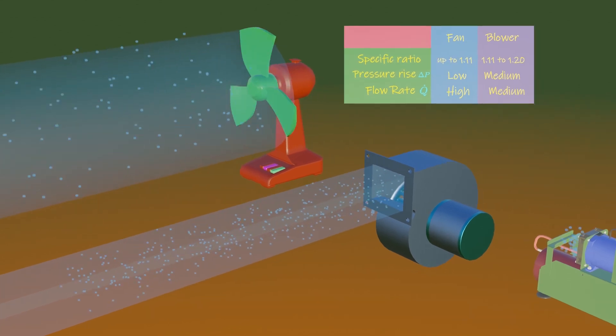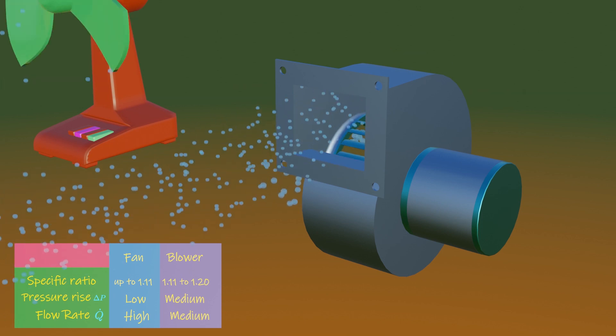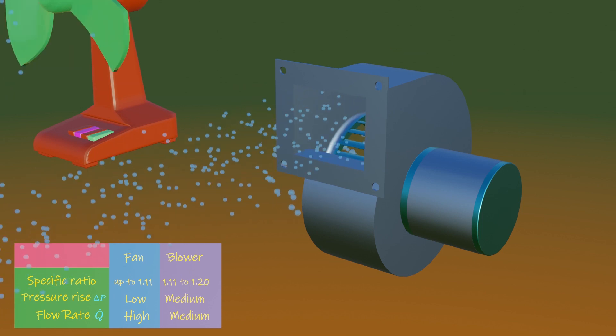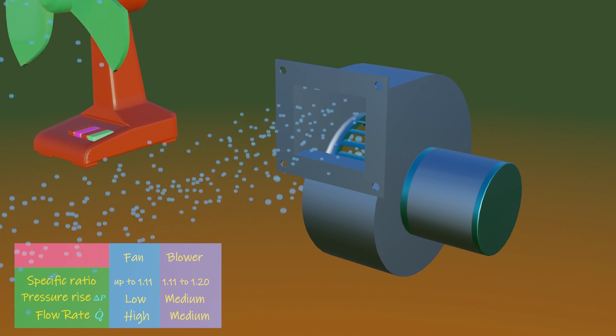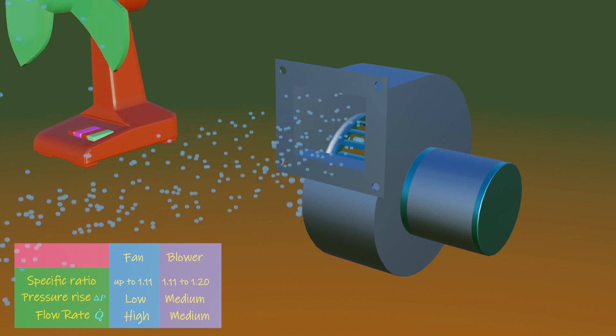So a blower is a gas pump with relatively moderate to high pressure rise and moderate to high flow rate. Examples include centrifugal blowers and squirrel cage blowers in automobile ventilation systems, furnaces, and leaf blowers.